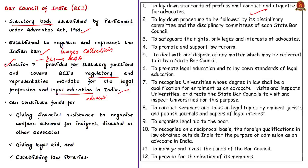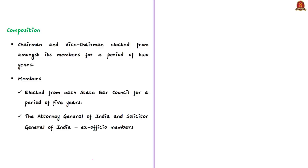The BCI can also constitute funds for welfare schemes for poor, disabled or other advocates, and for providing legal aid or establishing law libraries. Regarding the Chairman and Vice-Chairmen of the BCI: the BCI elects its own Chairman and Vice-Chairmen for a period of two years; it consists of members elected from each State Bar Council for a period of five years. Importantly, the Attorney General of India and the Solicitor General of India are ex-officio members of the Bar Council of India.